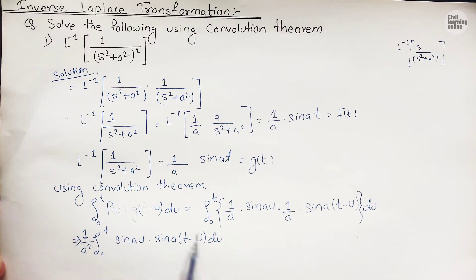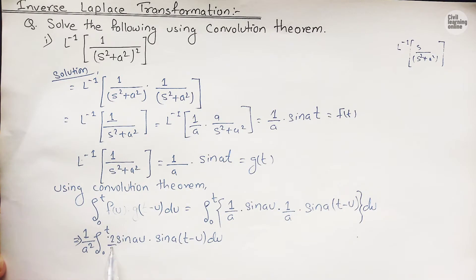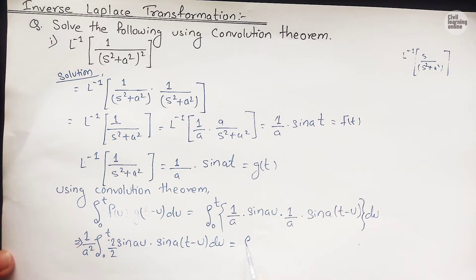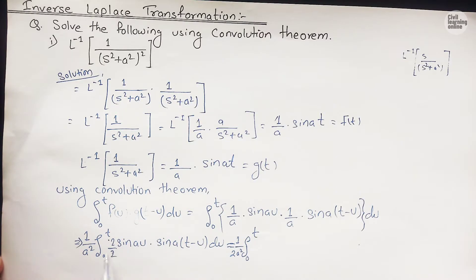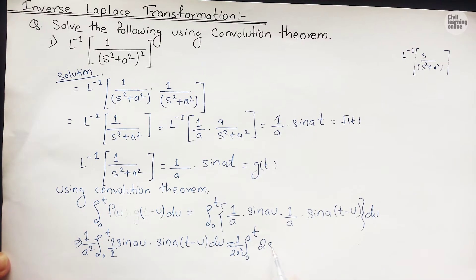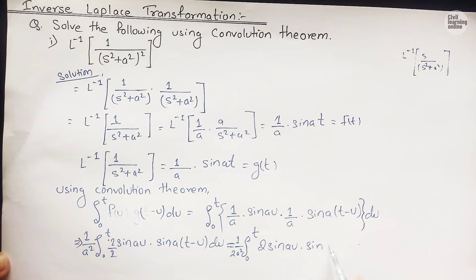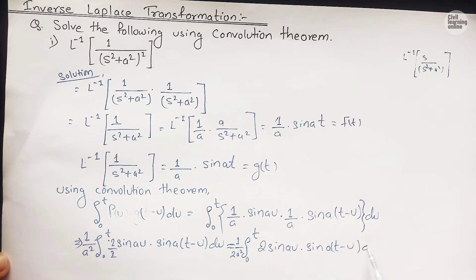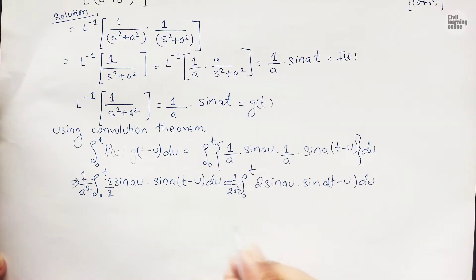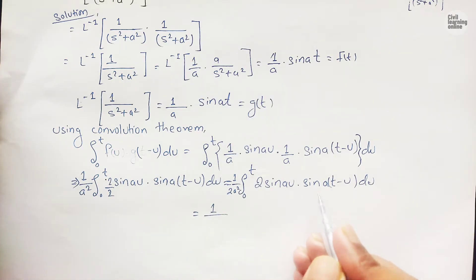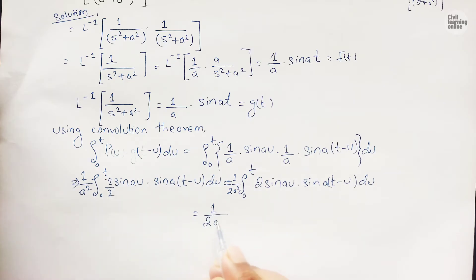We apply the formula 2·sin(A)·sin(B) = cos(A−B) − cos(A+B), dividing through by 2, so we have (1/(2a²)) times the integral from 0 to t of 2·sin(au)·sin(a(t−u)) du. The formula for 2·sin(A)·sin(B) is cos(A−B) − cos(A+B), which we are now going to use.